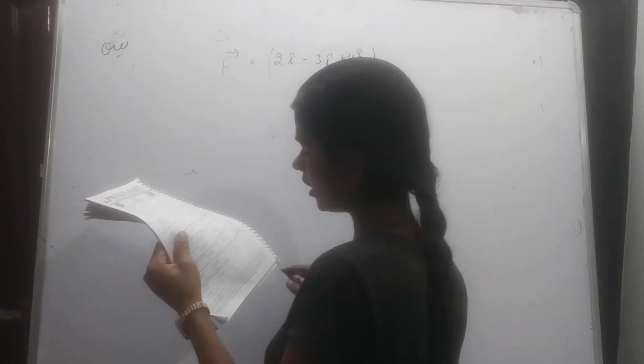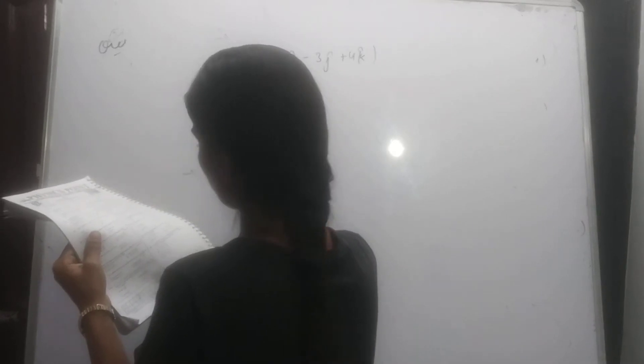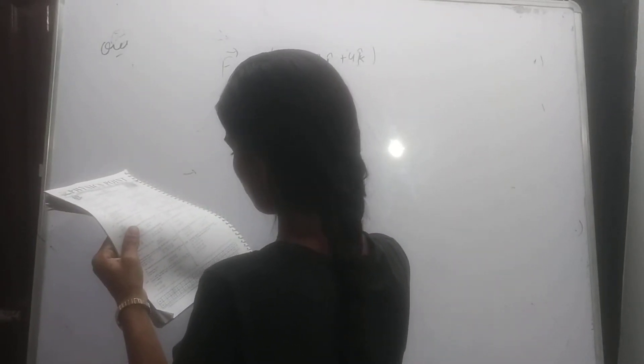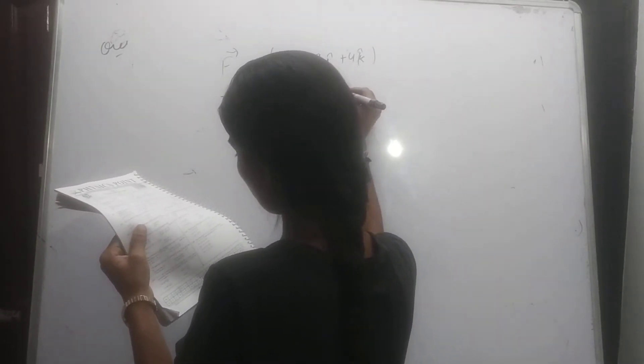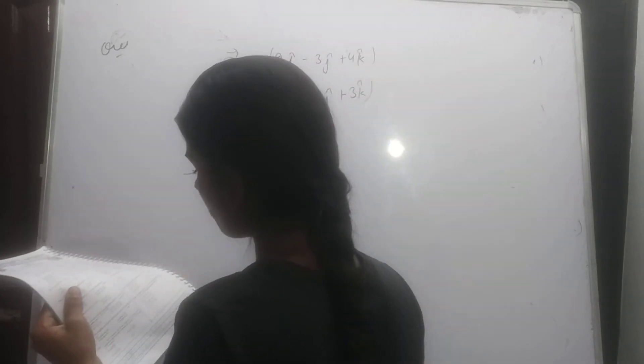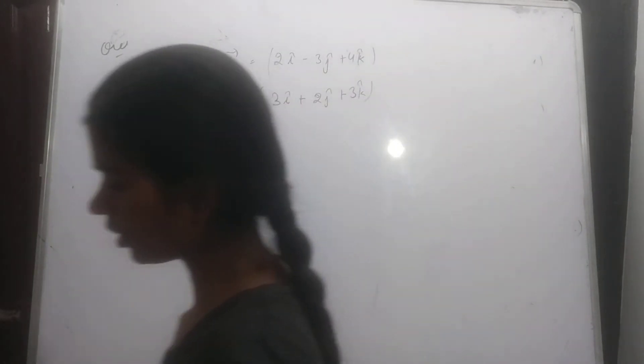Newton acting at the point R is equal to 3i cap plus 2j cap plus 3k cap meter about origin in Newton meter.